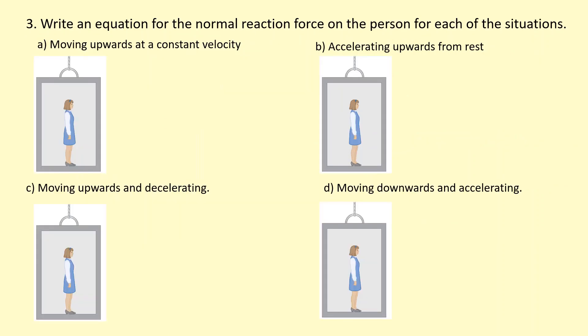Write an equation for the normal reaction force on the person for each of the situations: moving upwards at a constant velocity. Well in that case we know the resultant force has to be zero because they're moving at constant velocity. In fact it's the same as if they were at rest. The normal reaction force and her weight must be balanced. So N is equal to mg.